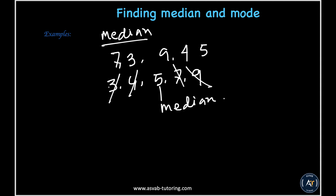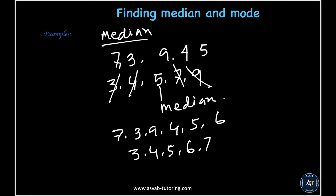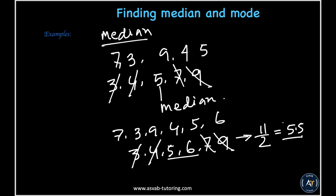If there's an even count of numbers, say 7, 3, 9, 4, 5, 6 — written in order: 3, 4, 5, 6, 7, 9 — cross out from both ends. You're left with two middle numbers, 5 and 6. Add them together and divide by 2: 5 plus 6 is 11, divided by 2 equals 5.5. So the median is 5.5.